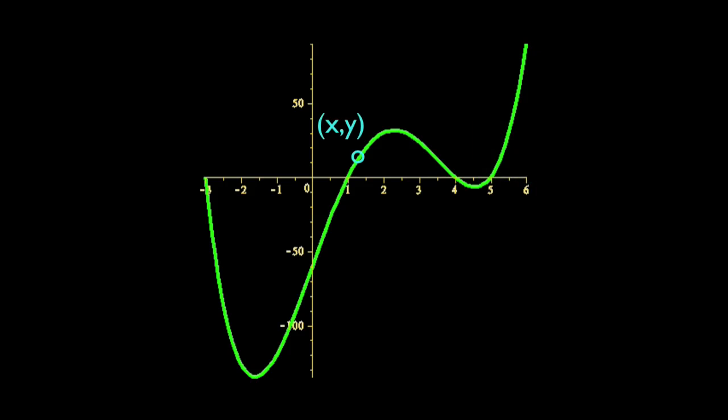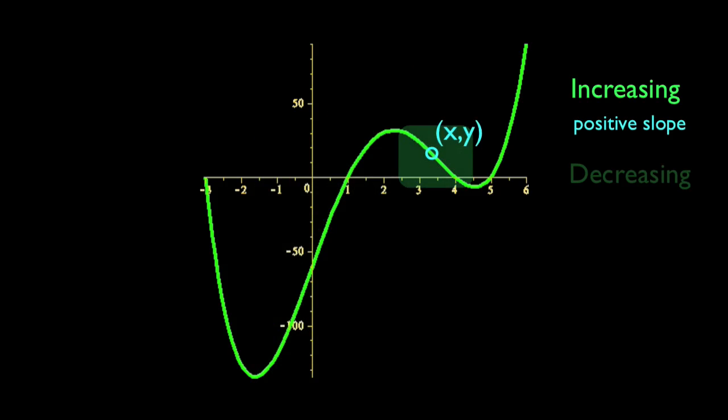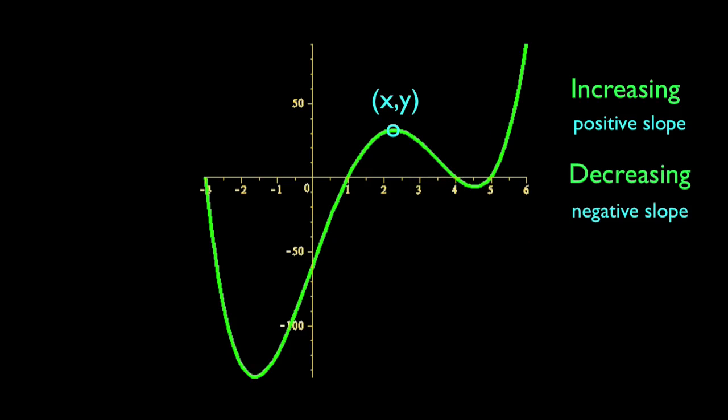At a general point x-y on the graph, if the function is increasing, a tangent line drawn on the graph will have a positive slope. If the function is decreasing, a tangent line will have a negative slope. At the turning point, the tangent line will have a slope of 0.